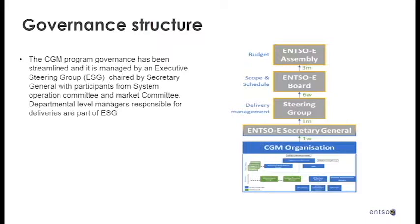The governance has been streamlined. The CGM organization directly reports to the Secretary General in a weekly rhythm. There is a steering group made up of the System Operations Committee chair and vice chair, and ENTSO-E managers of ICT and system operations, led by Secretary General Lauren Schmidt — meeting on a four to five week rhythm. The steering group reports to the ENTSO-E board on a six to seven week rhythm, and four times a year the information and status goes to the assembly.